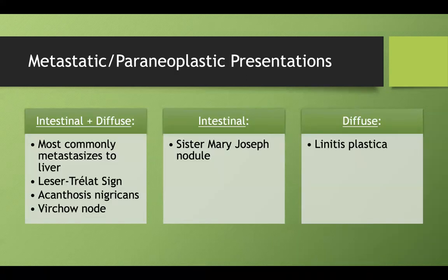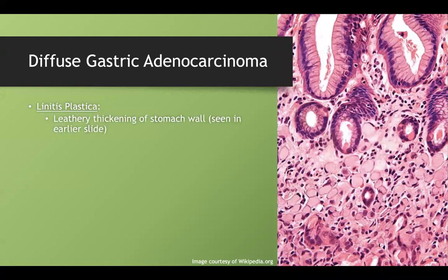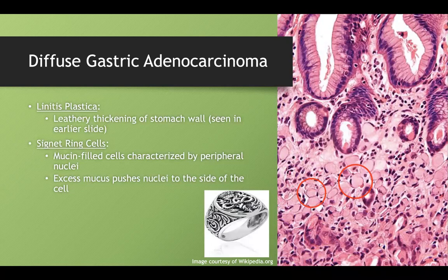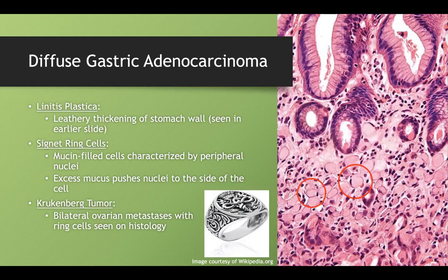Diffuse gastric adenocarcinoma presents with linitis plastica, signet ring cells, and Kruckenberg tumors. Signet ring cells are mucin-filled cells with peripheral nuclei — the nucleus is pushed to the side because so much mucus is produced that there's no space in the middle. Kruckenberg tumors are bilateral ovarian metastases, and biopsy of those lesions will also reveal signet ring cells.